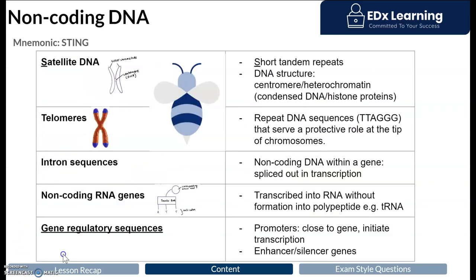When talking about the vast functions of non-coding DNA, I would say don't try to brain dump it — have a system for remembering the different roles. I use the mnemonic STING, which helps me remember all the complex functions of non-coding DNA. The S stands for satellite DNA, the T stands for telomeres, the I stands for introns, the N stands for RNAs, and the G stands for gene regulation sequences. Now we're going to delve into what each of these individual topics is about.